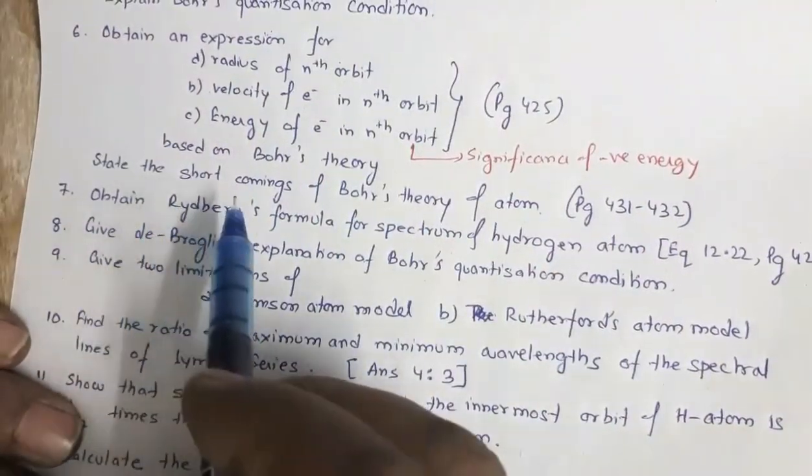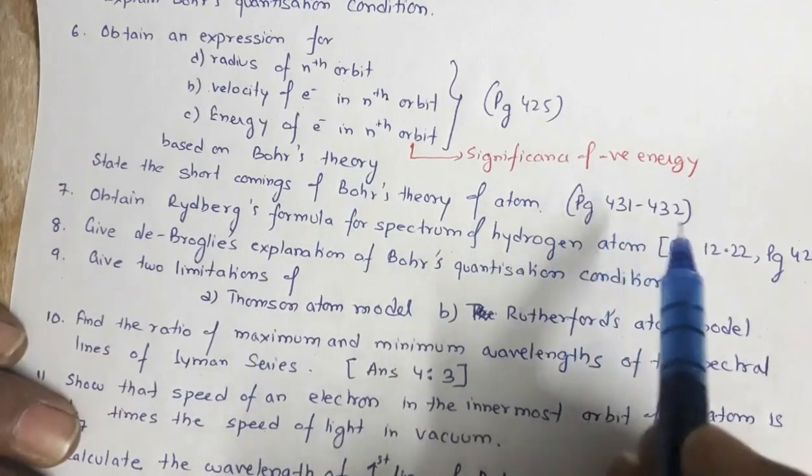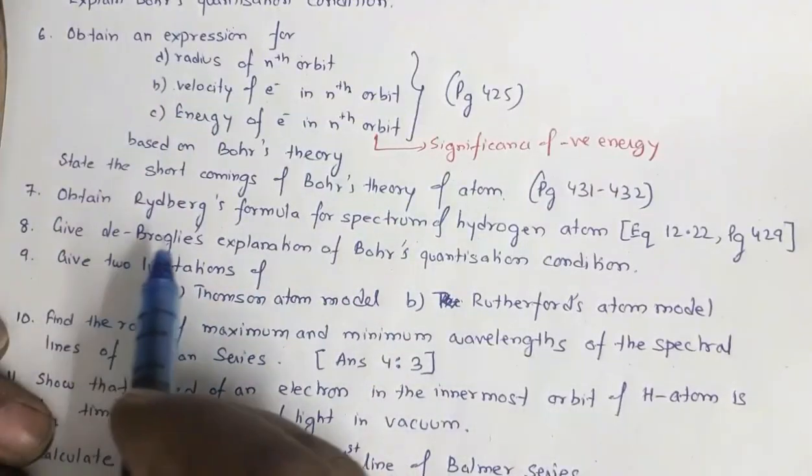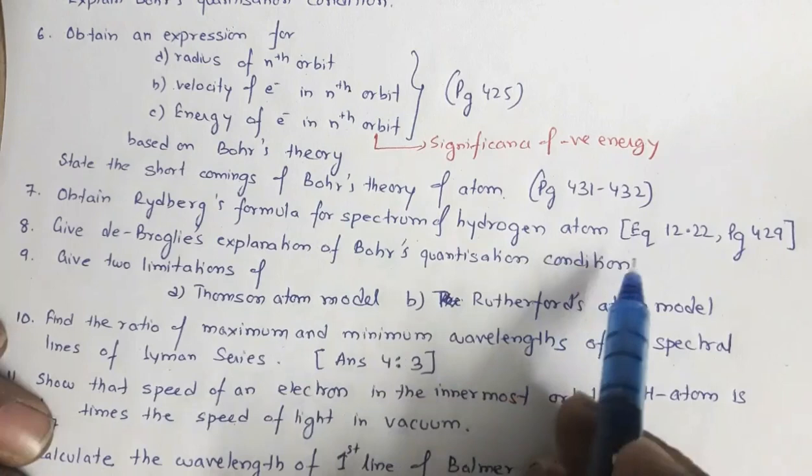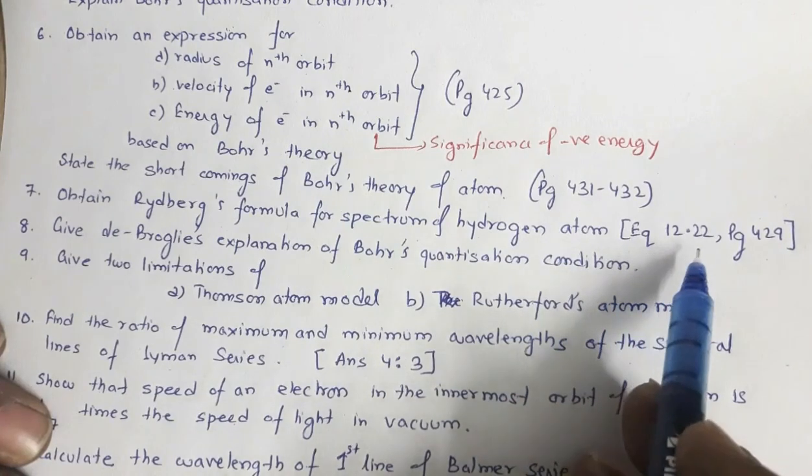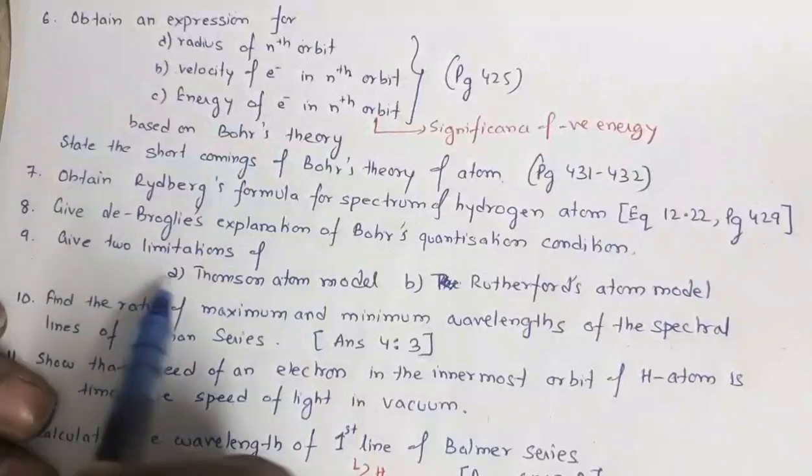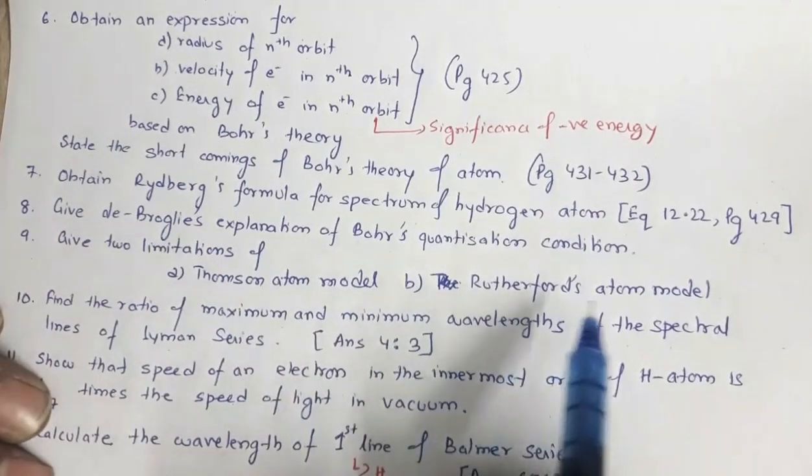Next is state the shortcomings of Bohr's theory of atom. This is given in page number 431 and 432. Next is obtain Rydberg's formula for spectrum of hydrogen atom. This is given in equation 12.22 page 429. Give two limitations of Thomson atom model and Rutherford's atom model.